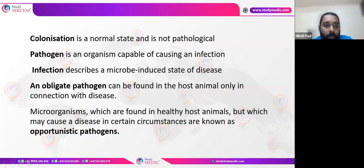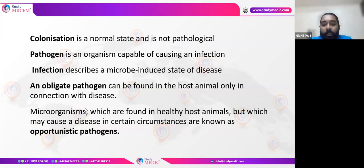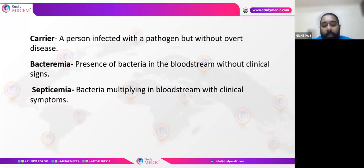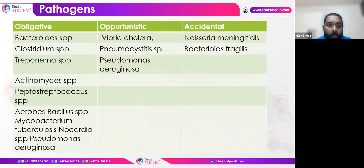Let's see a few commonly confusing terms. Colonization is not an infection — it's a normal state and not pathological. A pathogen is an organism capable of causing an infection. An infection is a microbe-induced state of disease. We have different types of pathogens: an obligate pathogen, found in the host only in connection with disease, and opportunistic pathogens, found in healthy hosts but which may cause disease in certain circumstances. A carrier is a person infected with a pathogen but without disease. Bacteremia is the presence of bacteria in the bloodstream without clinical signs.